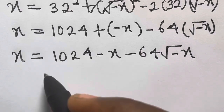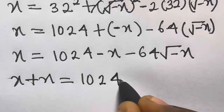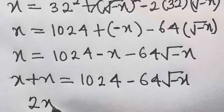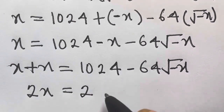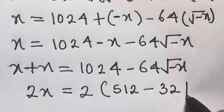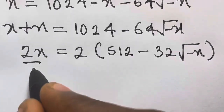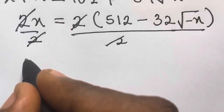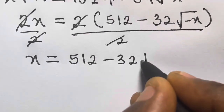We transfer x to the other side: x plus x equals 1024 minus 64√(−x), giving us 2x. We observe a common factor of 2, so factoring out: 2x = 2(512 − 32√(−x)). Dividing both sides by 2, we get x = 512 − 32√(−x).